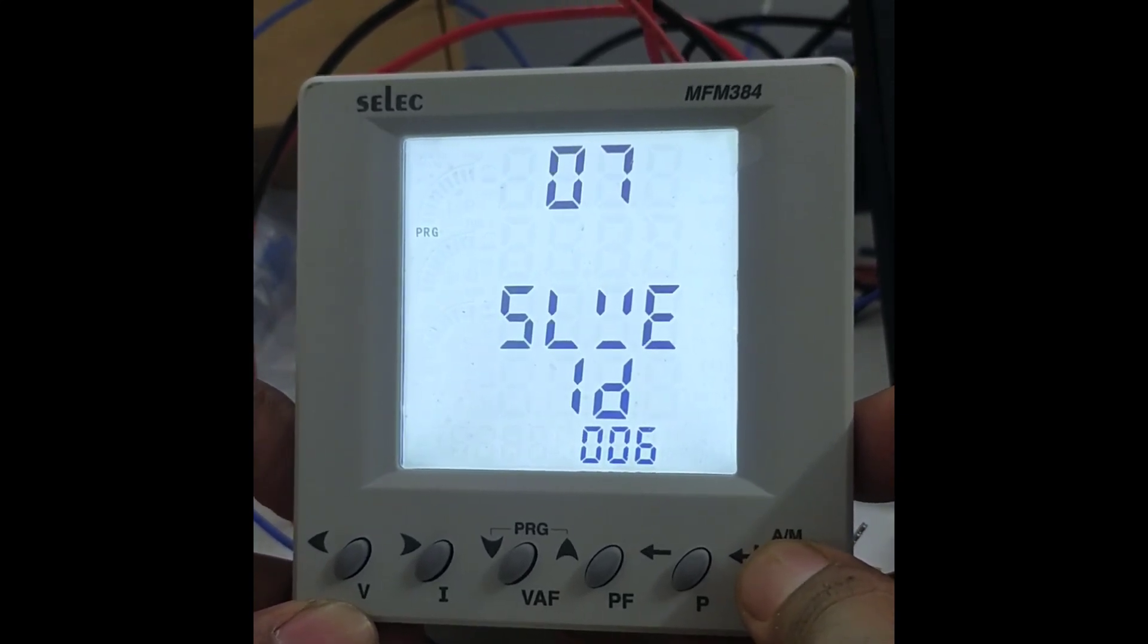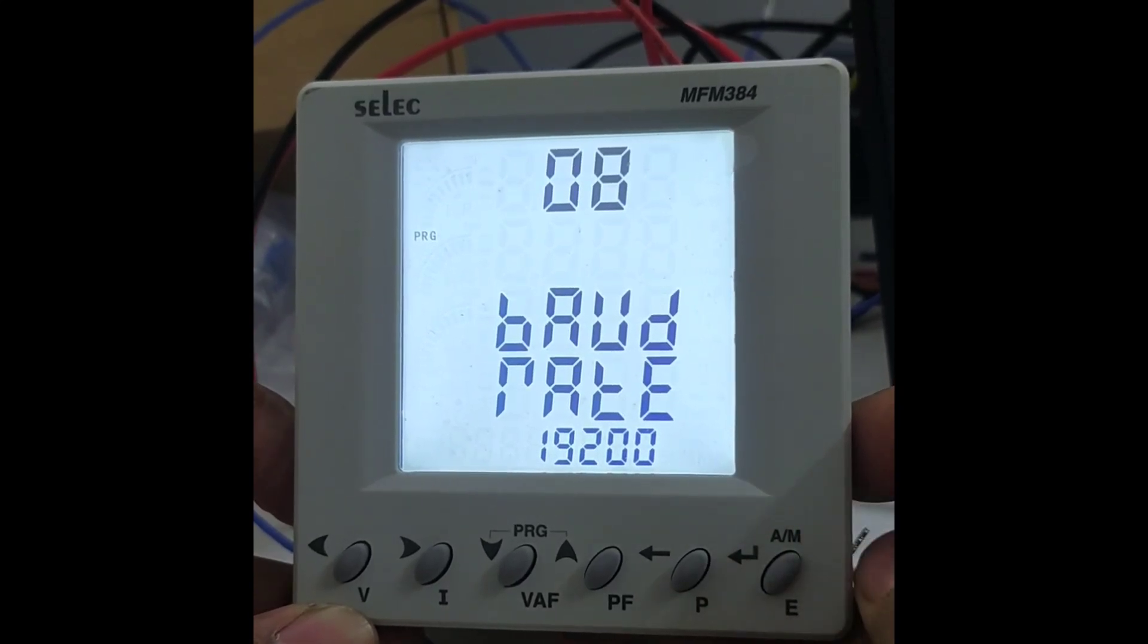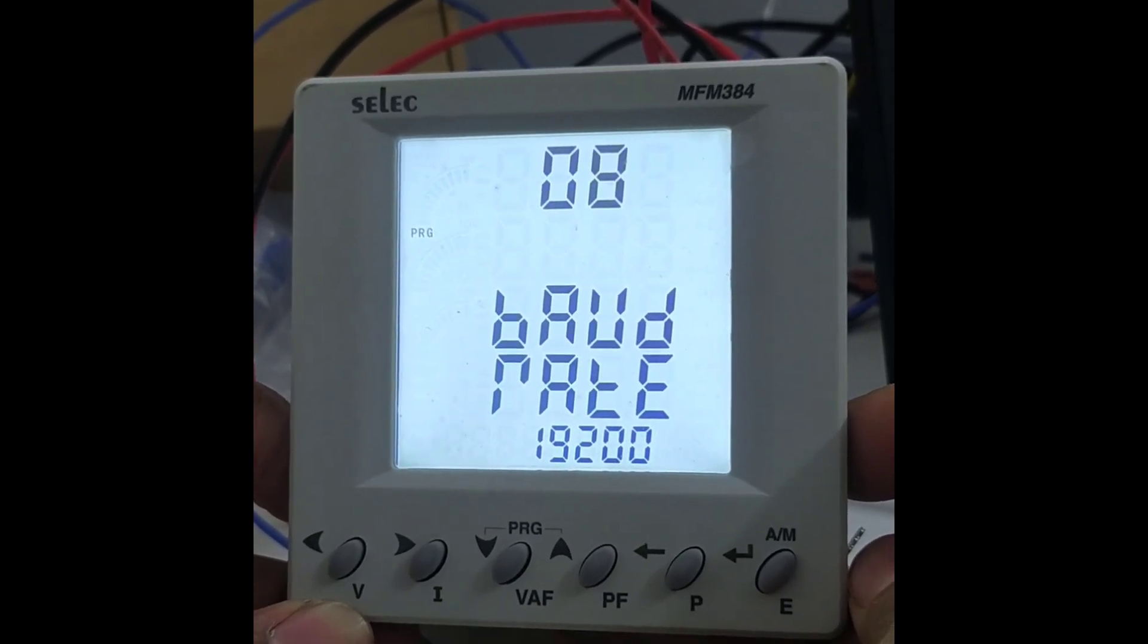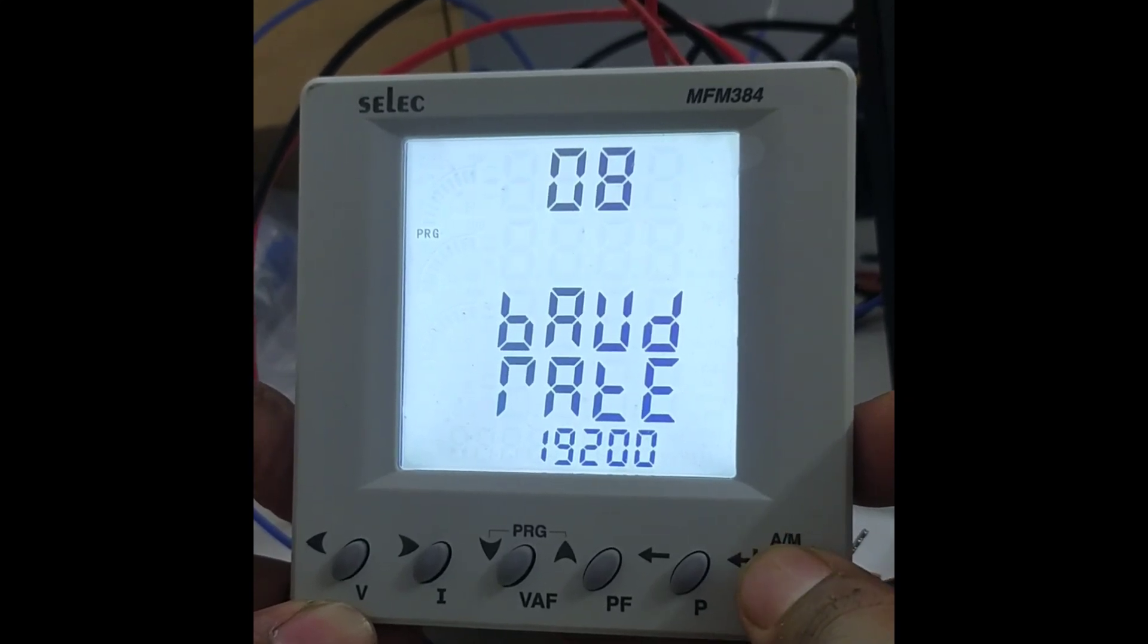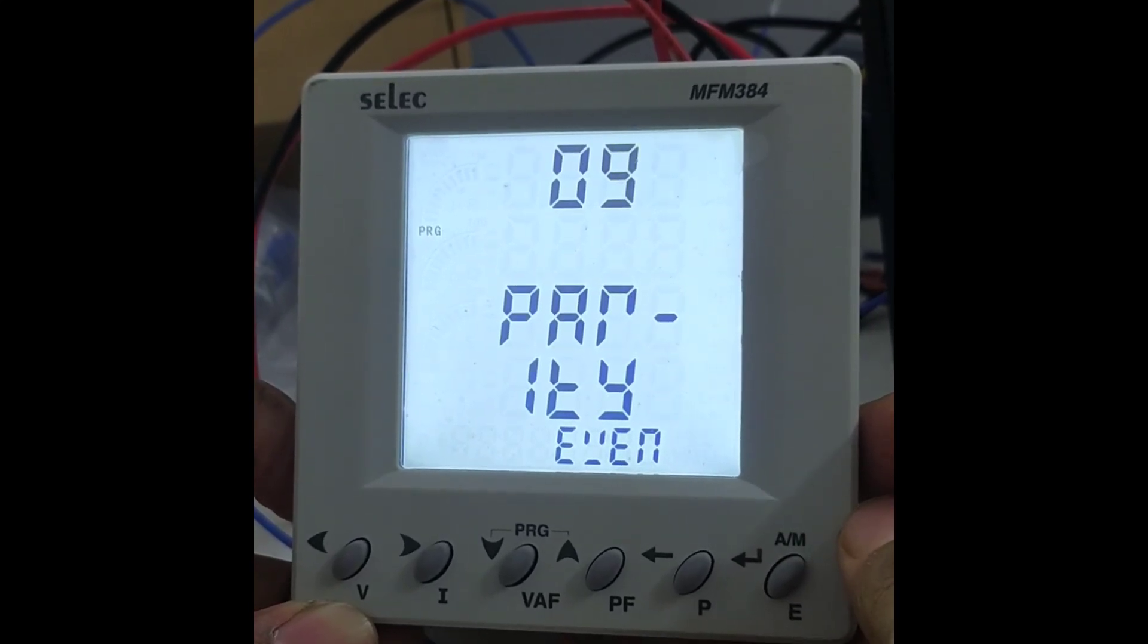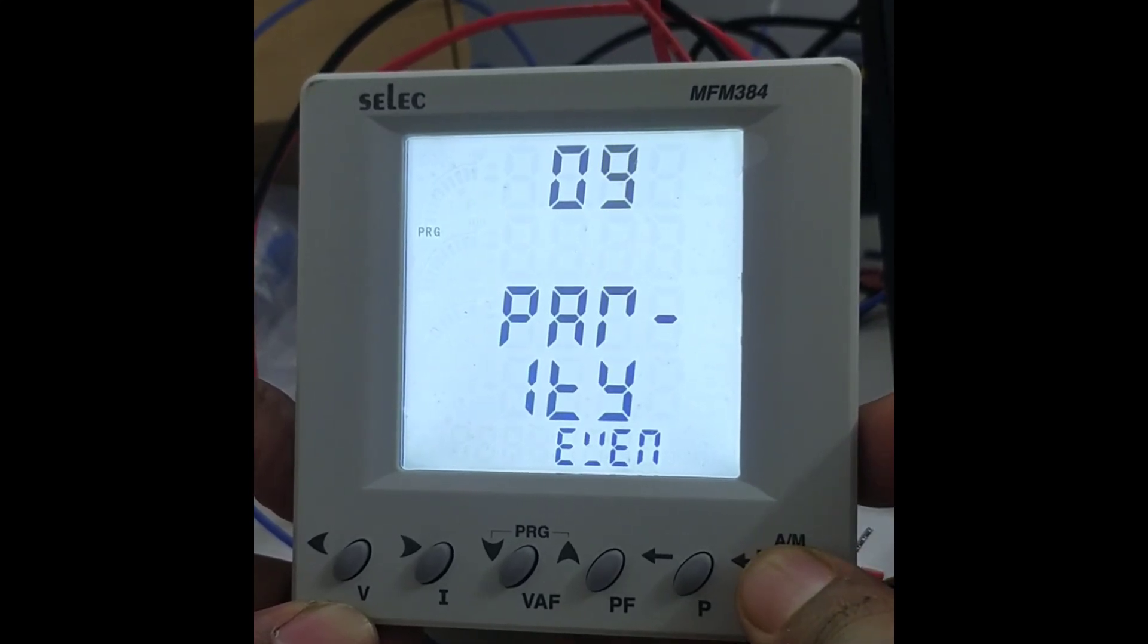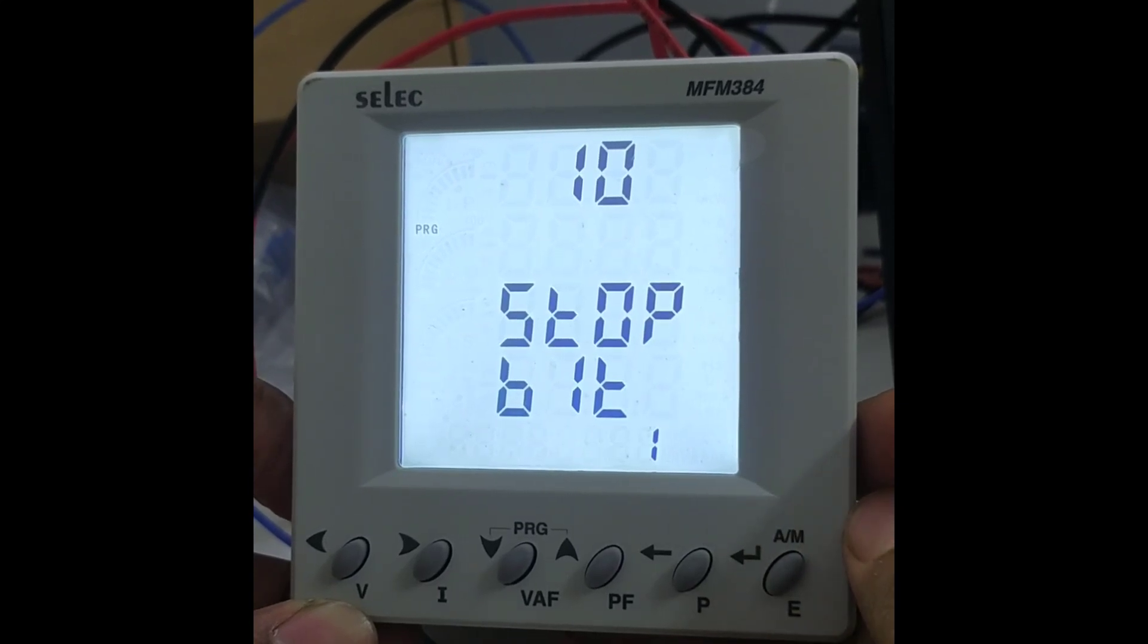Press enter. It's showing the baud rate, which is 19200. The next parameter is parity, which is even. You can change it with the help of the upper and downward buttons. Next, press enter. It's showing the stop bit, which is one.